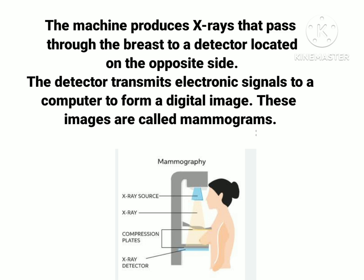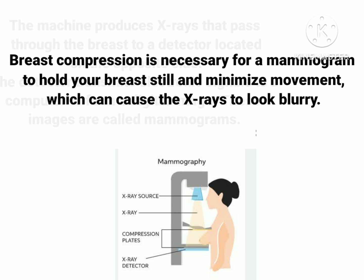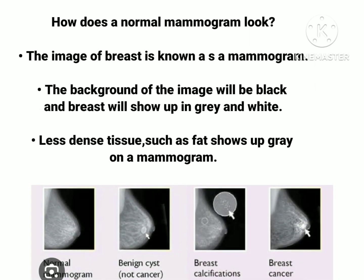The machine produces x-rays that pass through the breast to a detector located on the opposite side. The detector transmits electronic signals to a computer to form a digital image — these images are known as mammograms. Breast compression is necessary for a mammogram because it holds the breast still and minimizes movement, which can otherwise cause x-rays to look blurry.